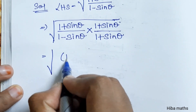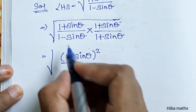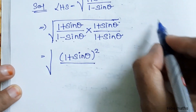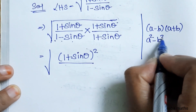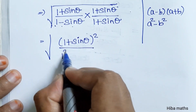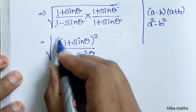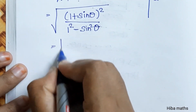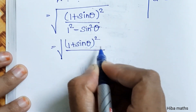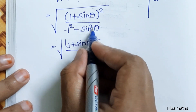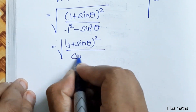This gives us the square root of (1 plus sin theta) whole square in the numerator. The denominator uses the identity (a minus b)(a plus b) equals a squared minus b squared, so we get 1 minus sin squared theta, which equals cos squared theta.